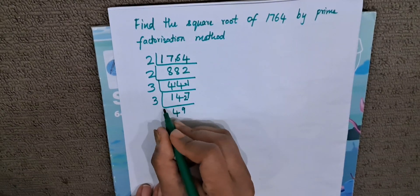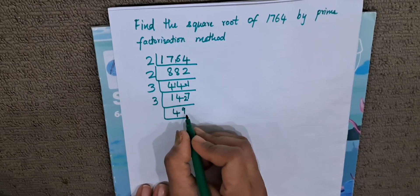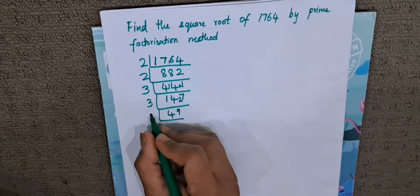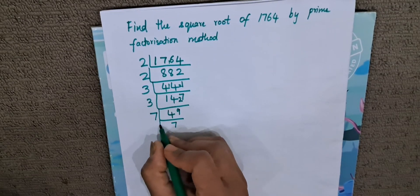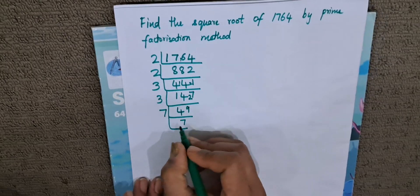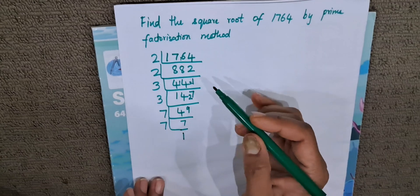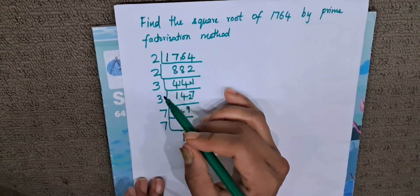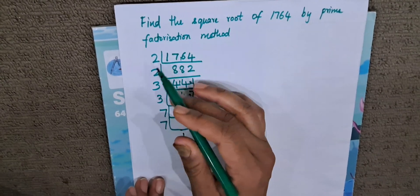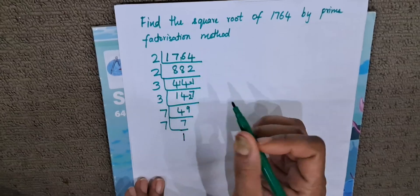So we got the number 49. We all know that 49 is divisible by 7. 7 7s are 49. And again, 7 is divisible by itself. 7 1s are 7. So we have the prime numbers that are the multiples of 1764.